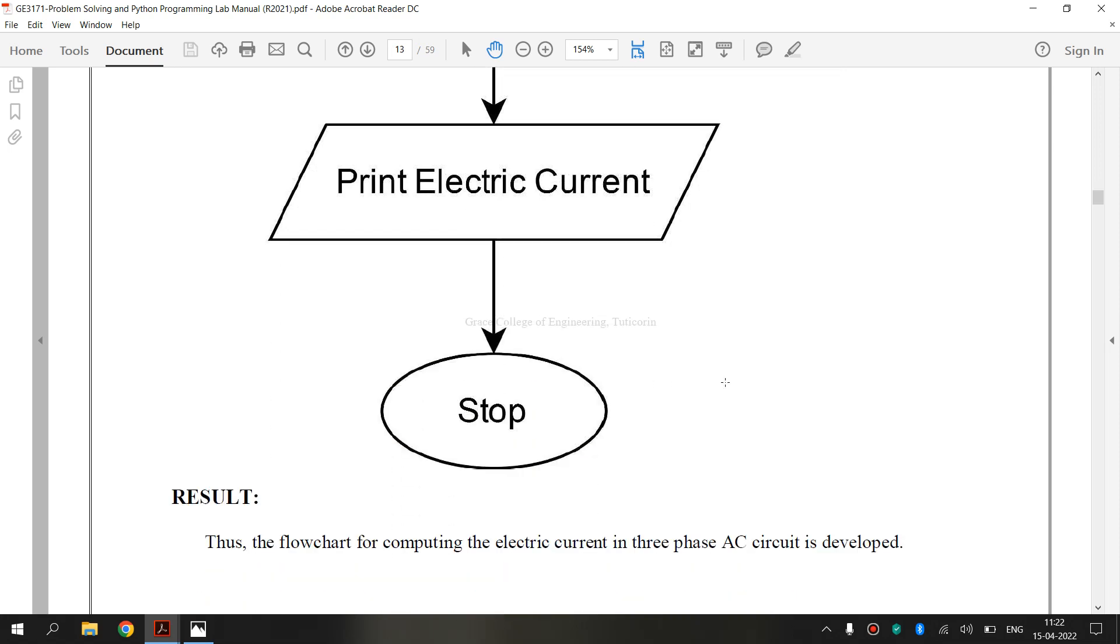Finally, we have drawn GE3171 Problem Solving and Python Programming Laboratory 1F experiment. That is how to draw the flowchart for computing the electric current in three-phase AC circuit. I hope you have understood. Thank you.